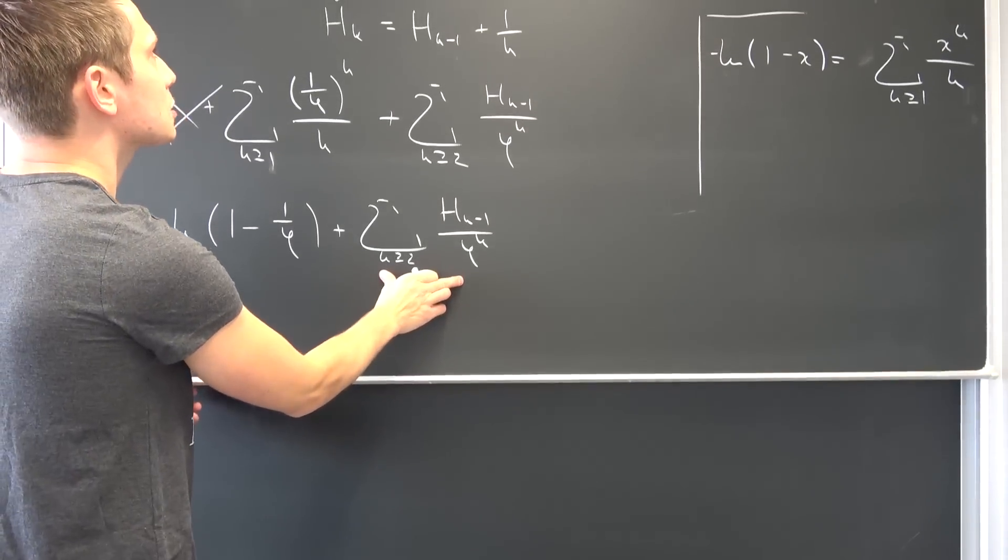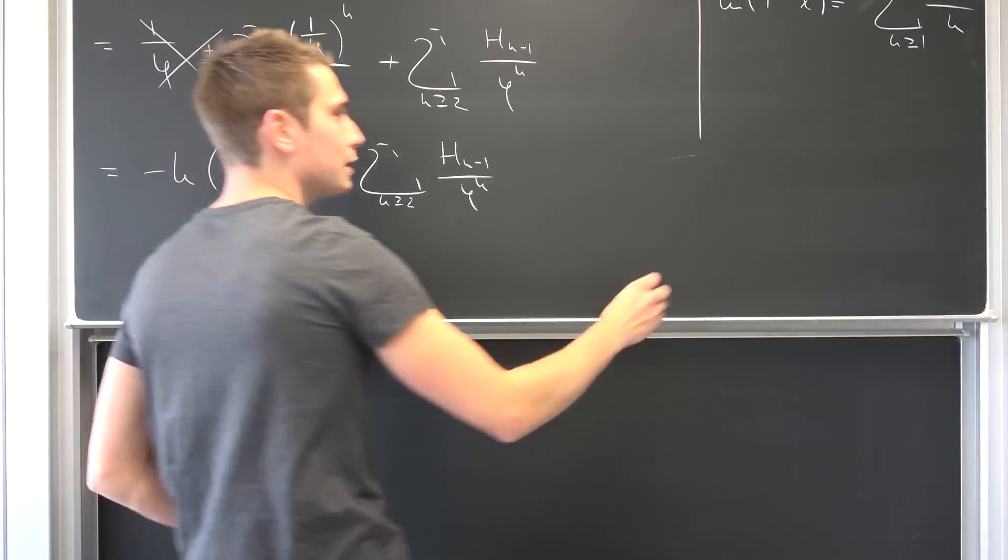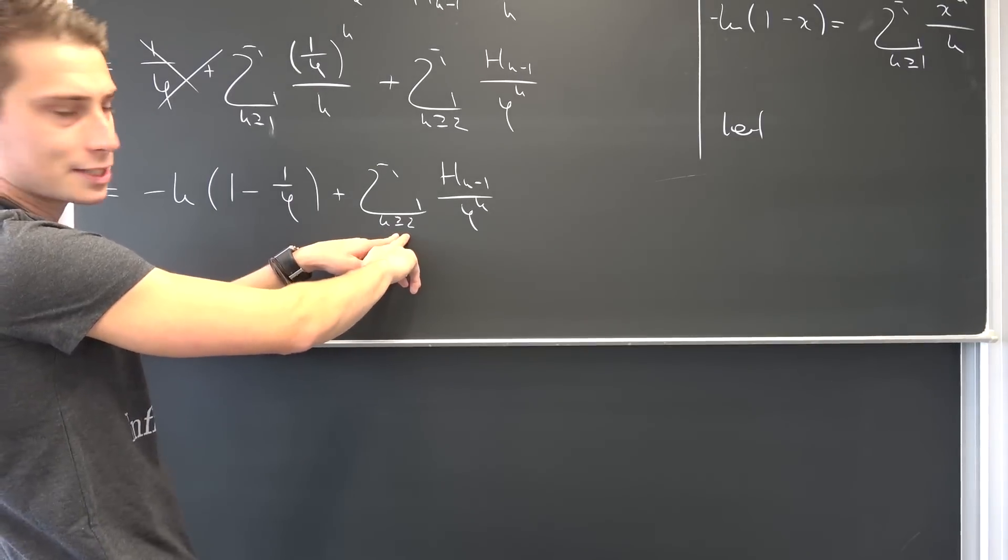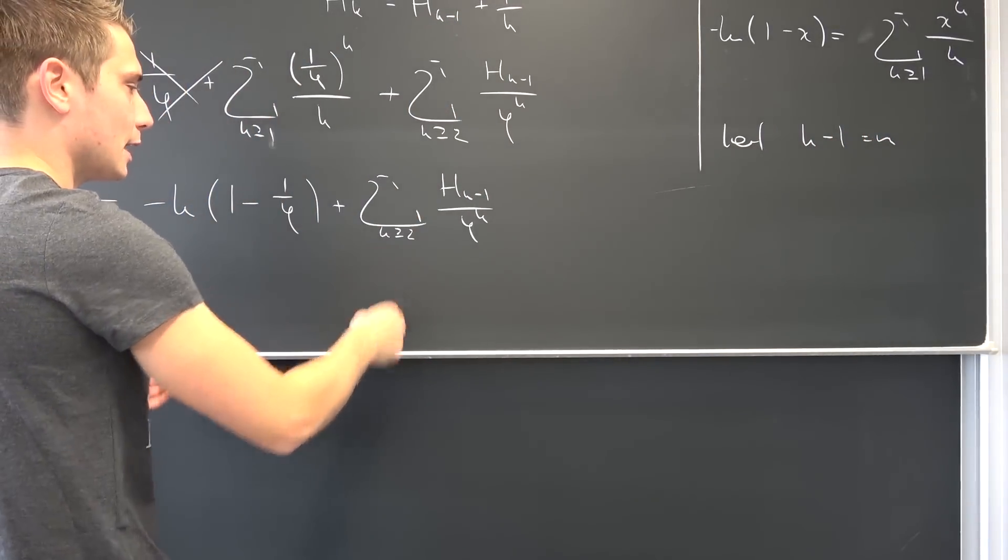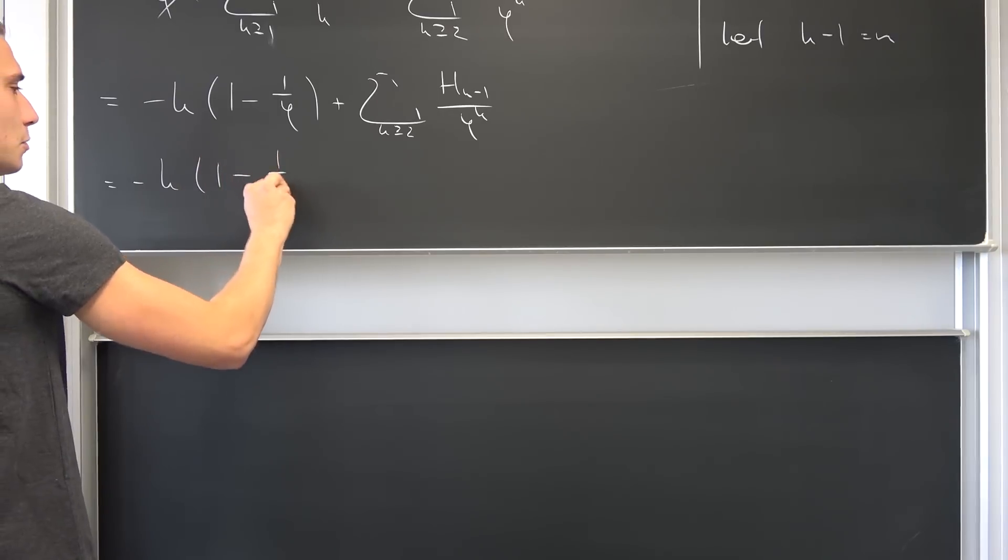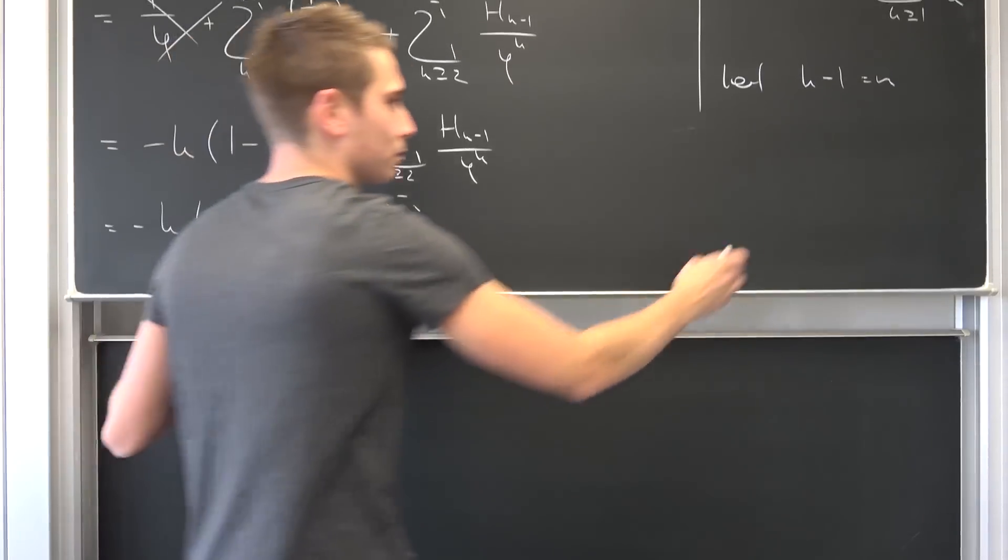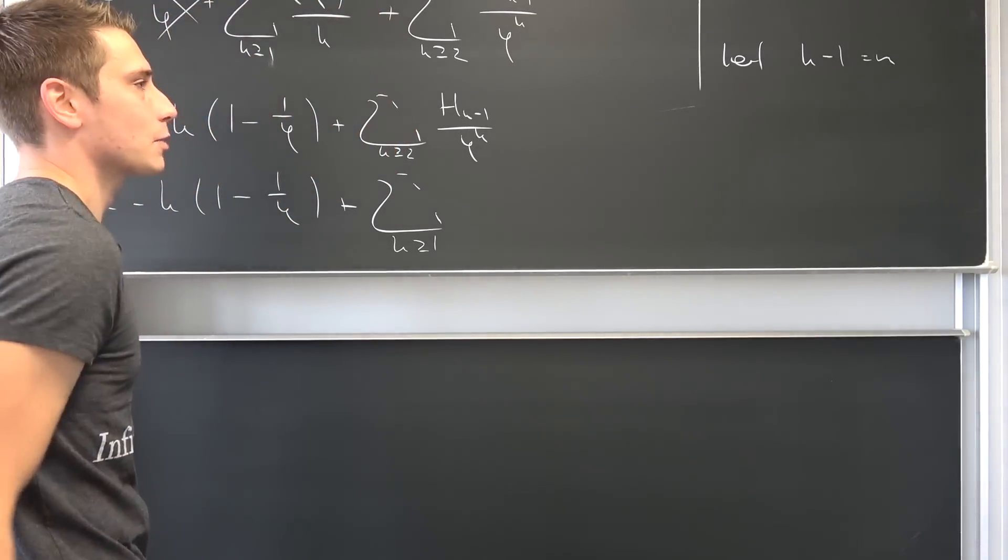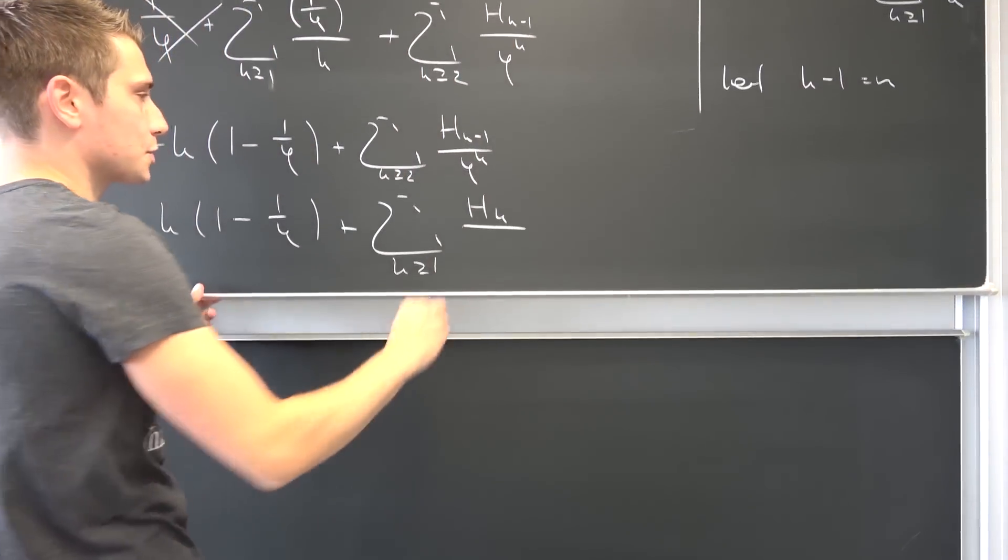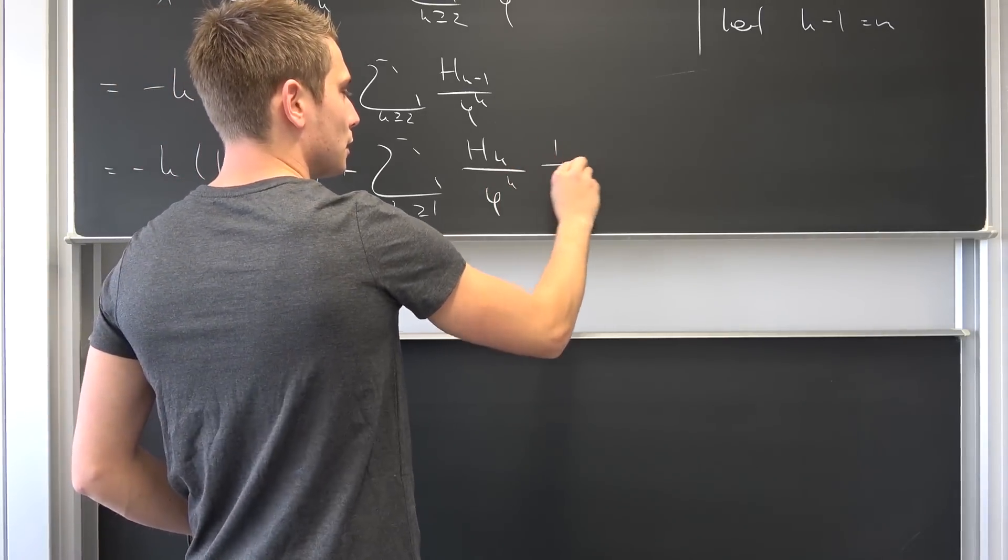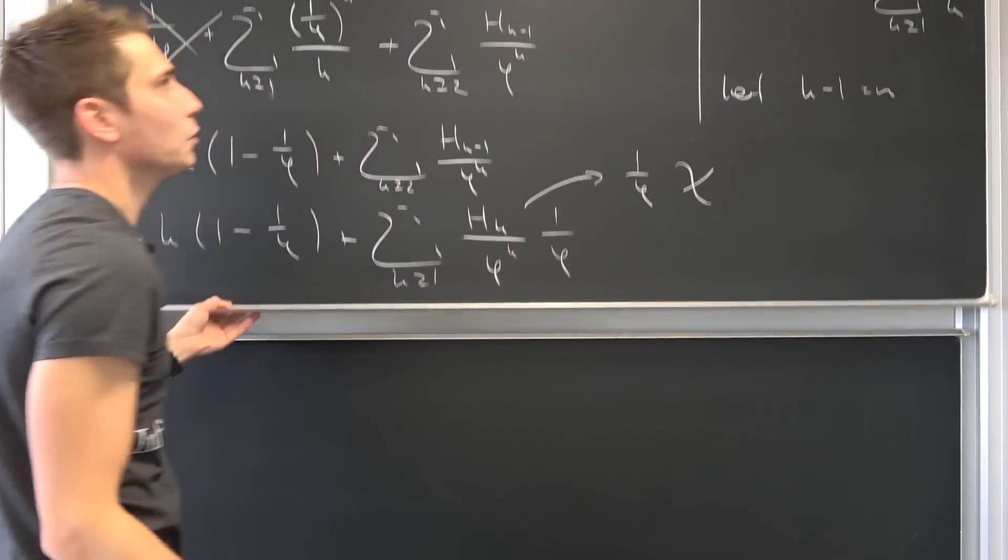Now this thing looks pretty similar to our original one that we had right here, but the index is a bit weird. Our index at the moment is starting at 2, so let's do some more index action. We want to get back to 1, so if we just let k minus 1 be equal to some new variable n, then we would end up with 1. So we have negative natural log of 1 minus 1 over phi plus our summation, k being greater or equal to 1, of H_k over phi to the k plus 1 power. Phi to the k plus 1 power is phi to the kth power times 1 over phi. Meaning this last part is actually simply 1 over phi times our original series.